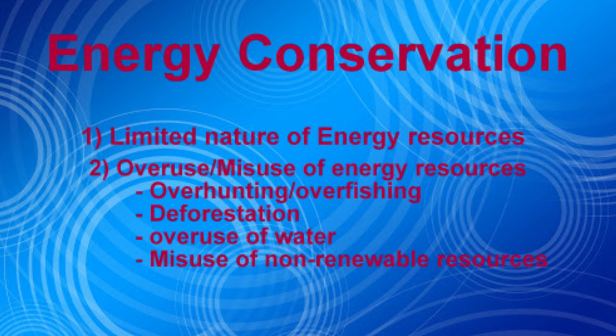Overuse takes many forms — overhunting, overfishing, and deforestation disturb natural habitats and organisms. Wood is used for building and fuel requirements causing significant damage. Besides, if we overuse water and don't use it efficiently, the natural recycling process cannot keep up — water reserves are not rapidly replaced, and the natural recycling process is slower for renewable resources.